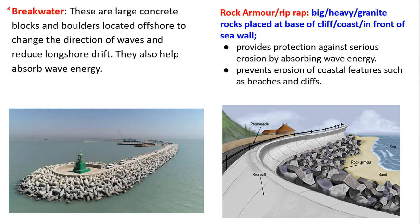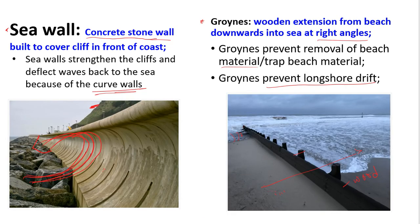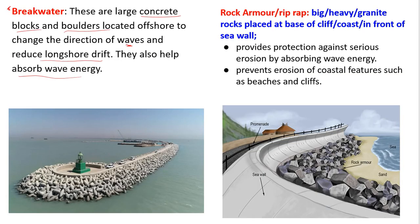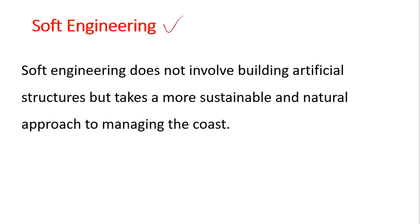Next is the breakwater, which is also a hard engineering process. These are large concrete blocks and boulders located offshore to change the direction of waves and reduce longshore drift. They also help absorb wave energy. Rock armor, also called riprap, consists of big, heavy granite rocks placed at the base of cliffs or in front of sea walls. Rock armor provides protection against serious erosion by absorbing wave energy and preventing erosion of coastal features such as beaches and cliffs.